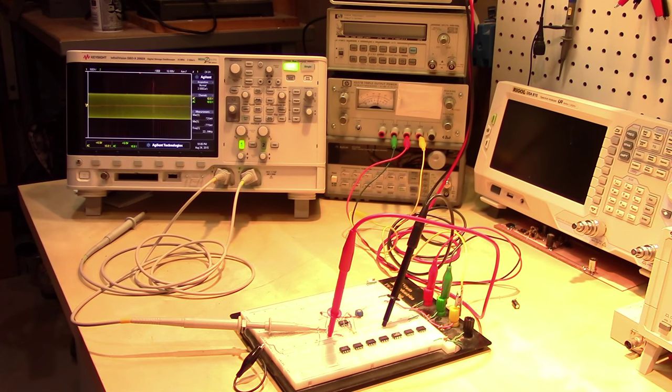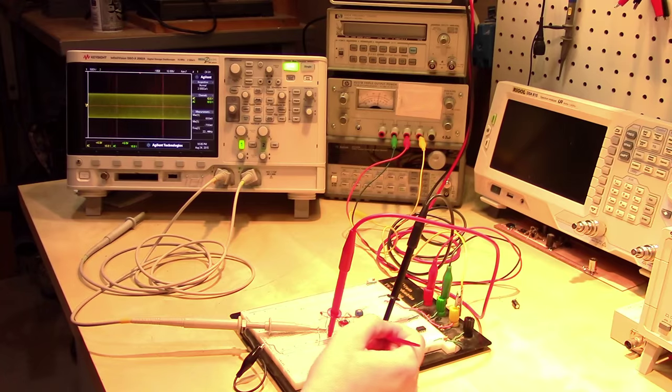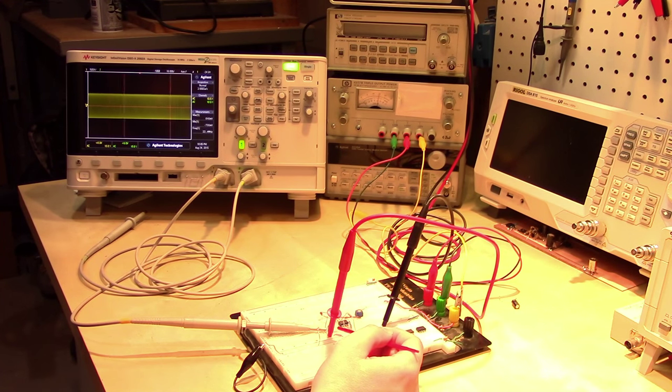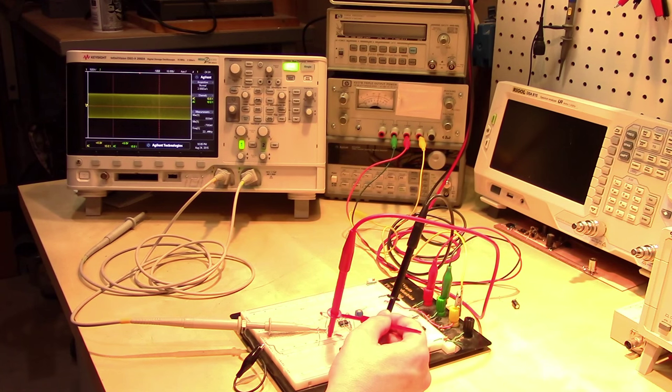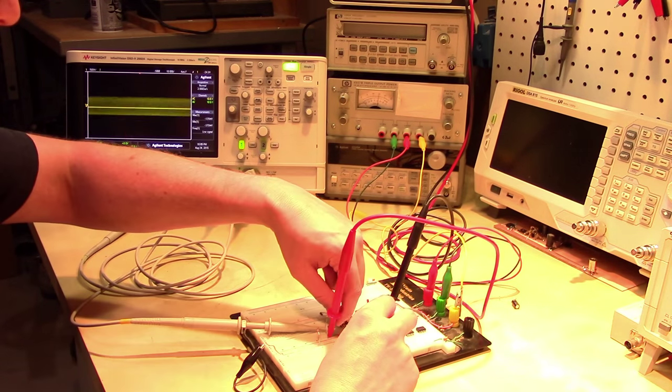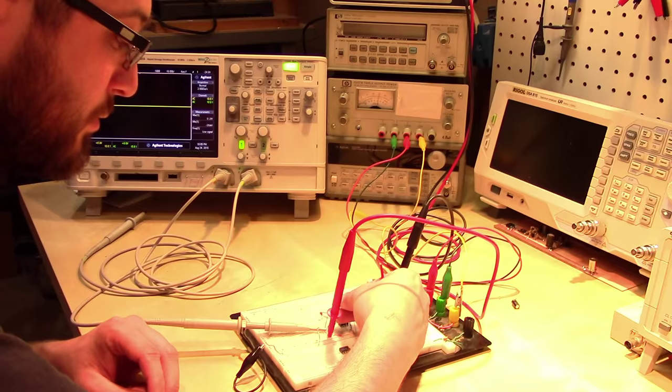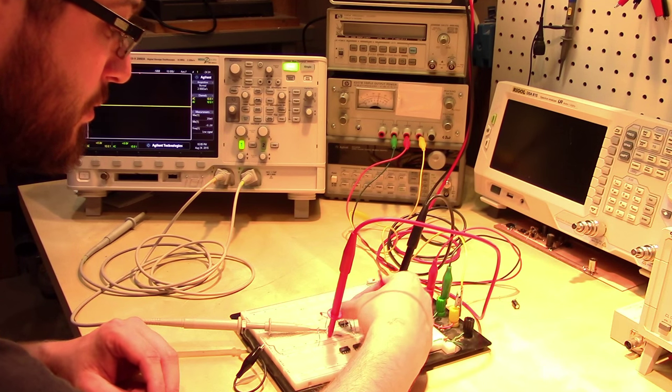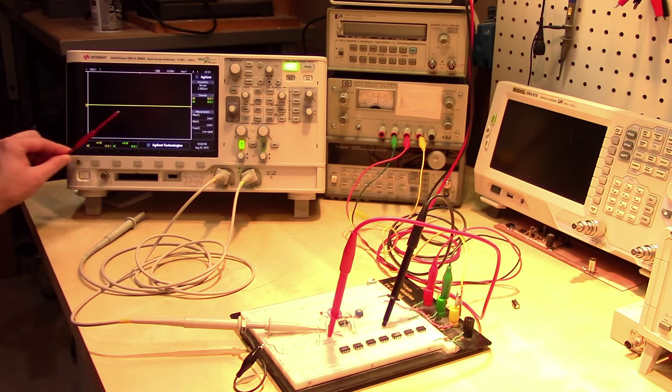So, we need to reduce the gain through that unintentional feedback path in order to stop these oscillations. Now, I've added a 10 ohm resistor here in series with the base, and you can see that we're still oscillating. So, we have not attenuated the signal in that feedback path enough in order to bring the gain down to below 1. However, if I bump this up by an order of magnitude, put in a 100 ohm resistor, you can see that we no longer have any oscillation.